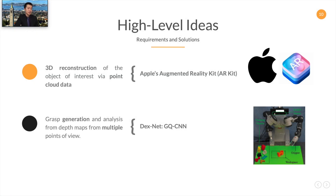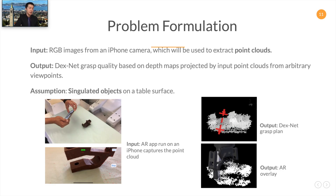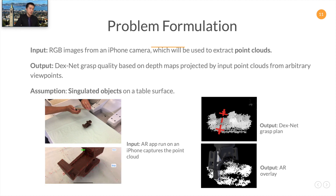Putting these ideas together, we propose a system that uses ARKit run on the iPhone to reconstruct the three-dimensional representation of the object, which can then be used to generate and analyze grasps from multiple viewpoints via DexNet. We formulate our problem as follows. The input data of our system are RGB images from an iPhone camera, which will be used to extract point cloud data by ARKit. With the point cloud, we can transform them into depth maps by projecting them from arbitrary viewpoints and output a DexNet grasp quality. Note that our fundamental assumption here is that we only deal with singulated objects on the table surface.